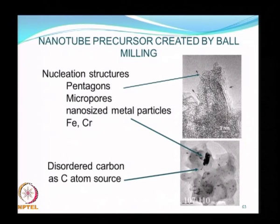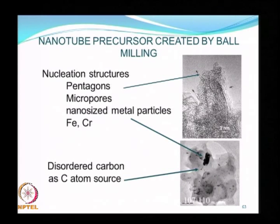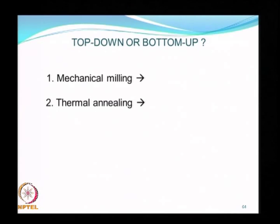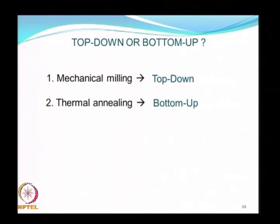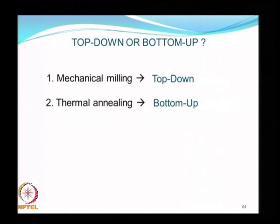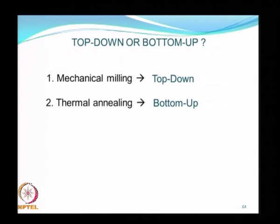The nucleation structures include pentagons, micropores, and nano-sized metal particles, with carbon being incorporated as the source of carbon atoms. When you look at the combined mechanical milling and thermal annealing process, it is difficult to classify it as purely top-down or bottom-up, because the mechanical milling itself is top-down, while thermal annealing takes loose fragments generated by milling and bonds them together to produce a crystalline structure—a combination of both methodologies, similar to the sol-gel technique.